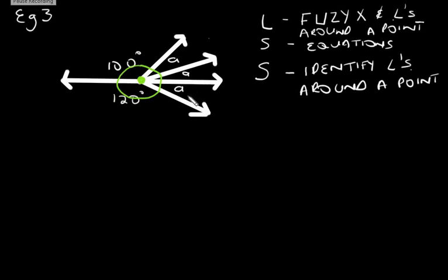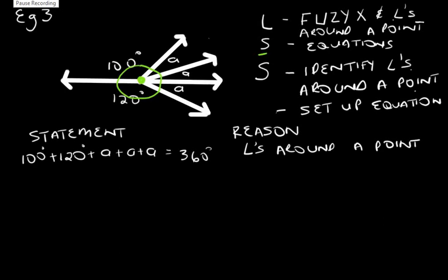Then which skills do we need to employ? We need to also know how to do equations. And then our strategies is we need to identify the angles around the point which we have already done. We also need to set up an equation to solve for A. So let's do that now. Therefore 100 degrees plus 120 degrees plus A plus A plus A will be equal to 360 degrees. Our reason is angles around a point. And now we need to solve for the equation.